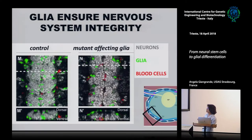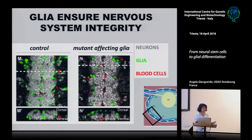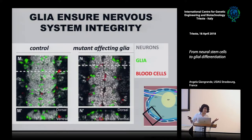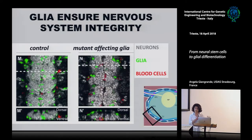The first function we can allocate to glia cells is integrity of the nervous system. This is a role played by the cells at the surface — the subperineural and perineural glia. Leakiness in the blood-brain barrier makes it possible for things to get in, including hemocytes. This goes back to the name of glia, which in Greek means 'glue.' Initially glia cells were considered simply structural components of the nervous system — a very strong simplification — because you will see how many other functions glia cells have, and even more in the vertebrate nervous system, where they even have a role as real stem cells.